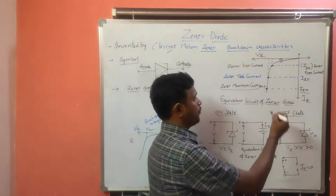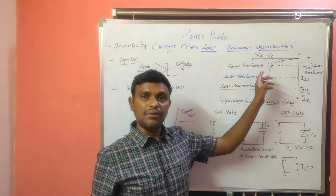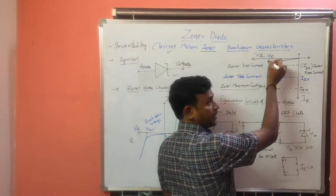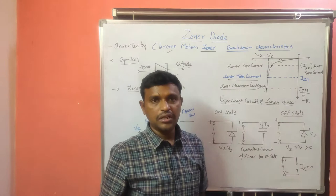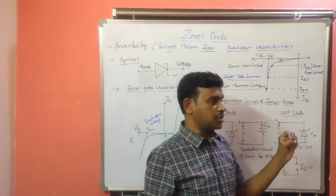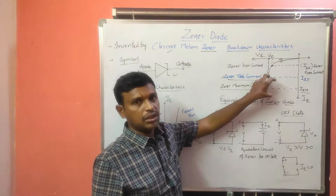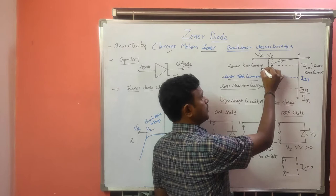If we consider VZ — the GINA breakdown voltage — after reaching VZ on the reverse bias voltage axis, the current will go sharply up to a point. This current is called the GINA test current, which is the current at the GINA breakdown voltage. So the divisions of our reverse bias characteristics are: GINA knee current, GINA test current, and GINA maximum current.